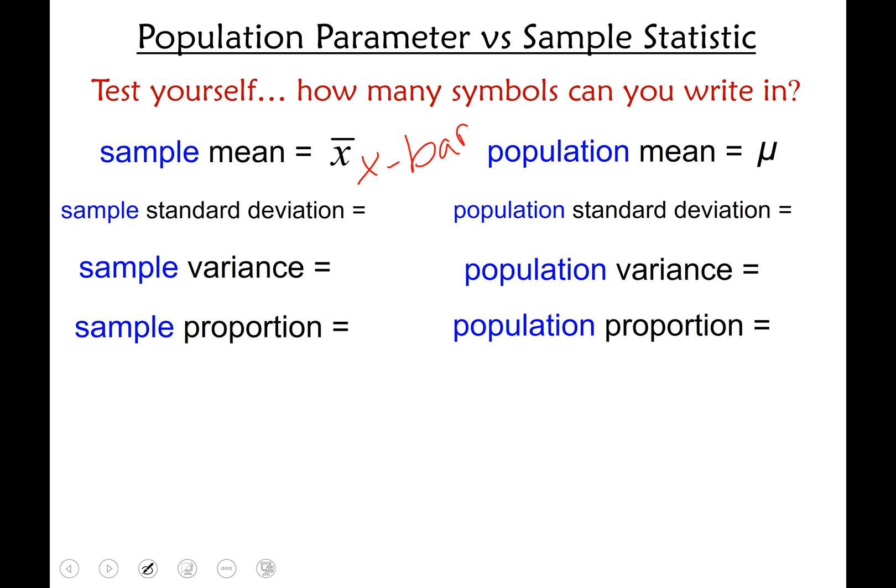For population mean if you put this symbol great job that symbol is mu. For sample standard deviation lowercase s. For population standard deviation if you put this symbol you got it right and that is sigma, the lowercase Greek sigma.